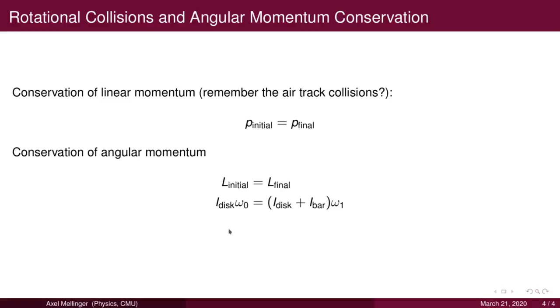Now initially, the only angular momentum is due to the rotating disk. So we have L initial equal to i disk times omega 0, the initial angular velocity.